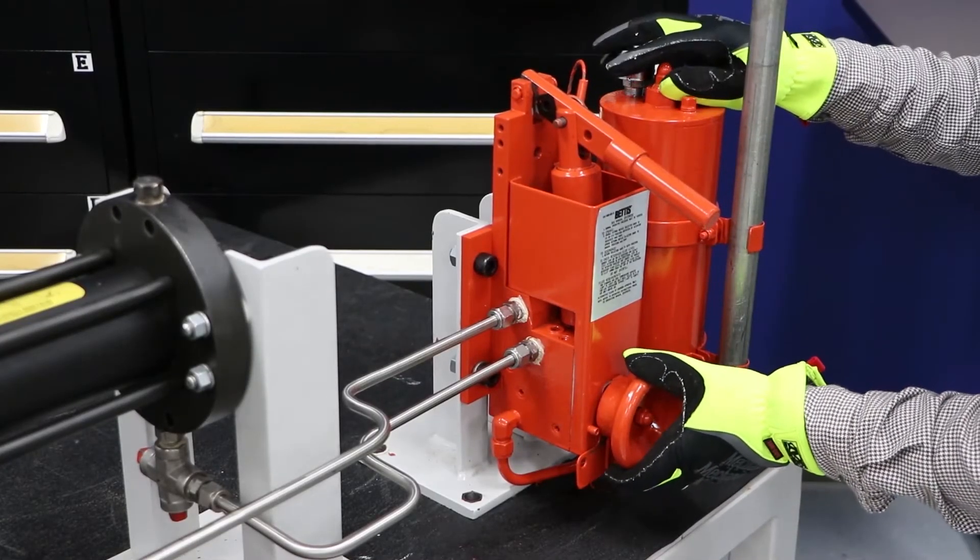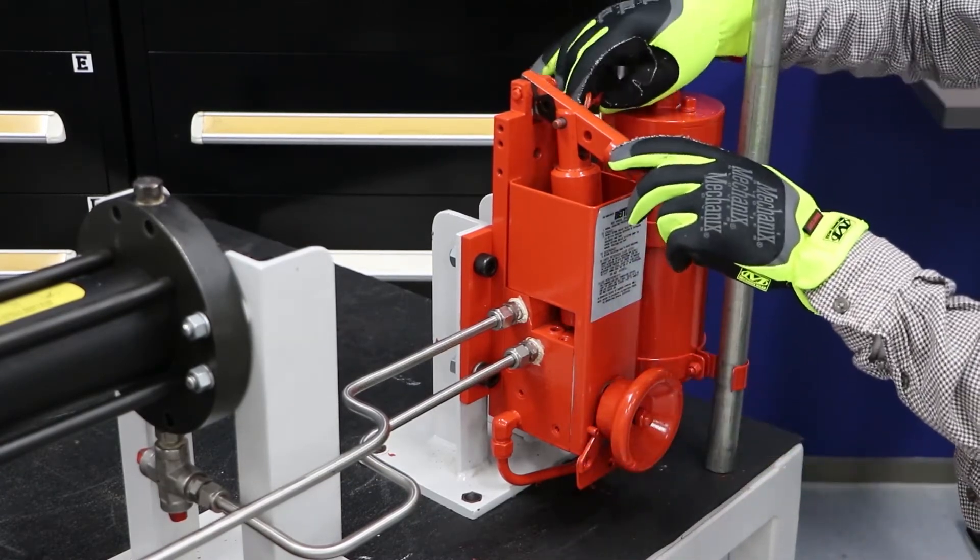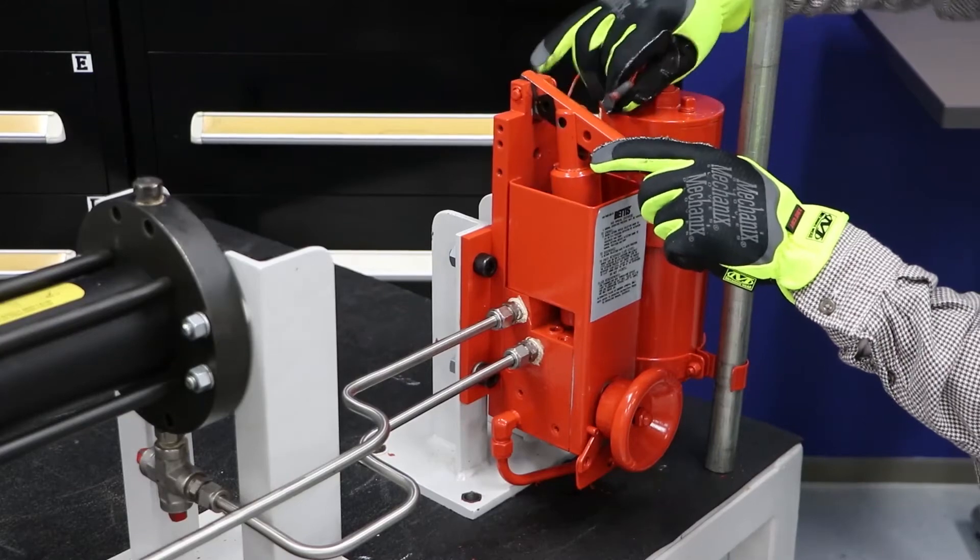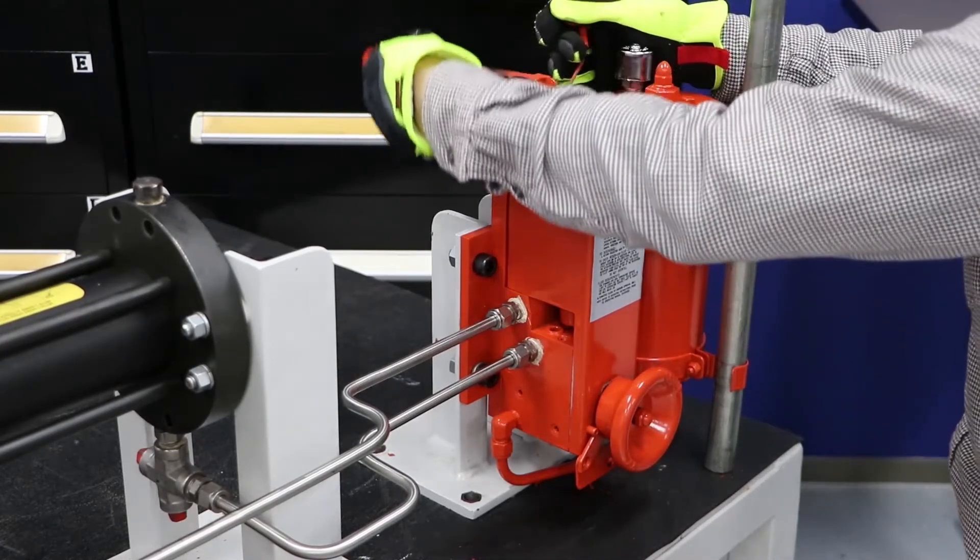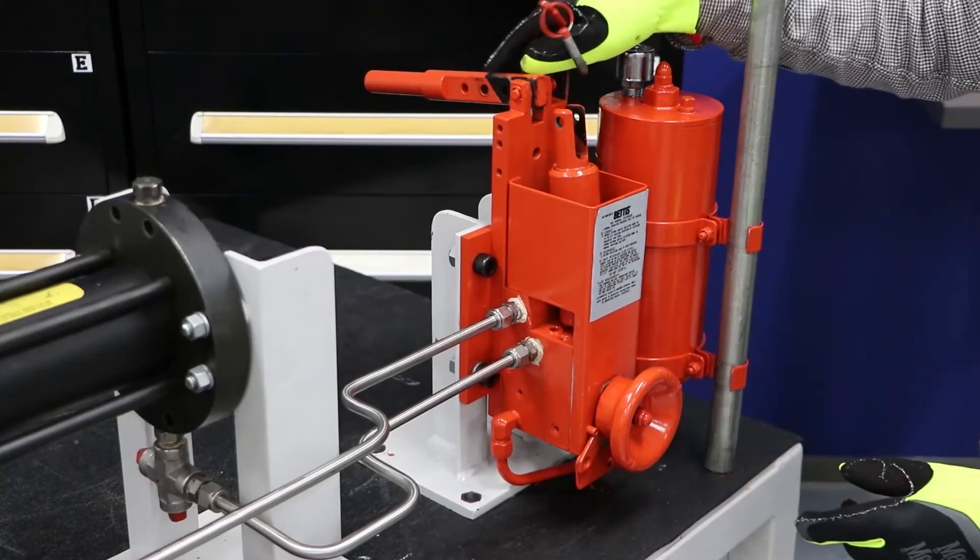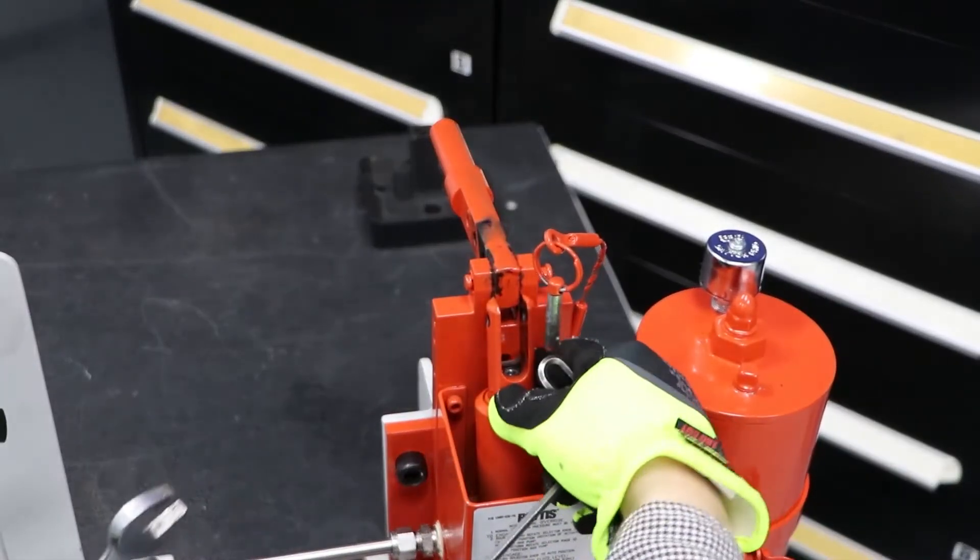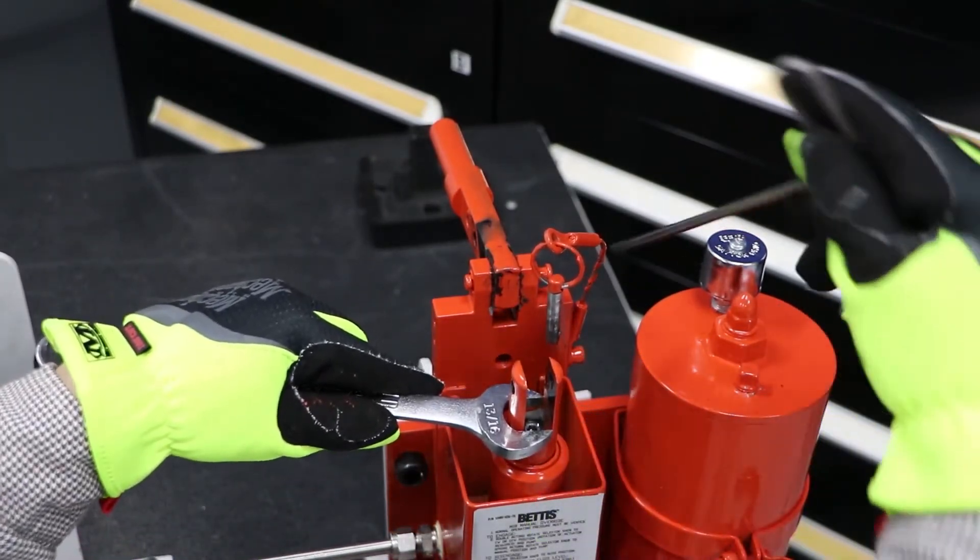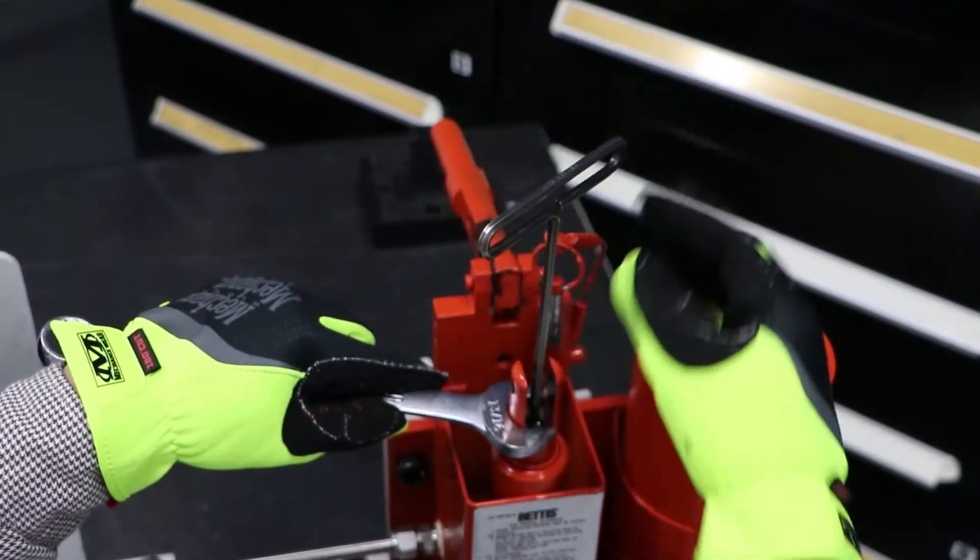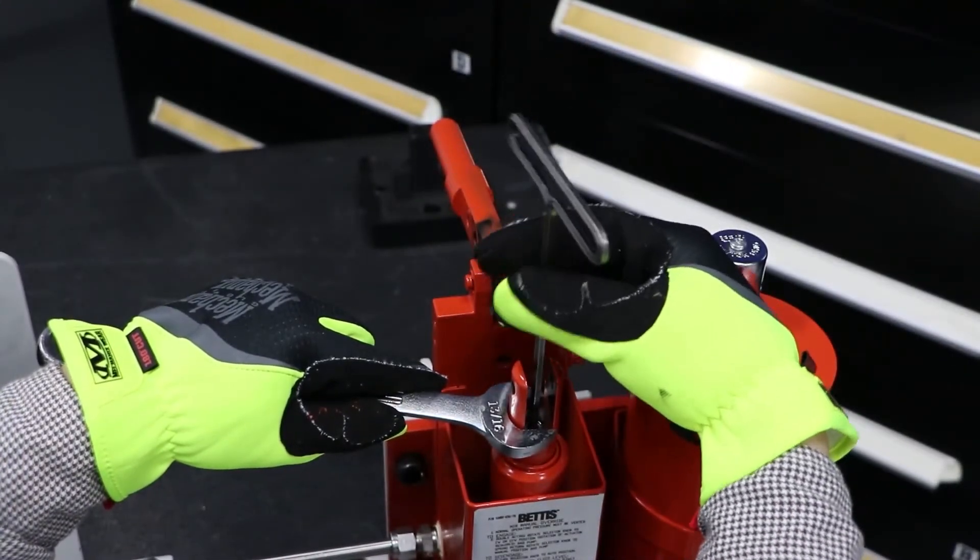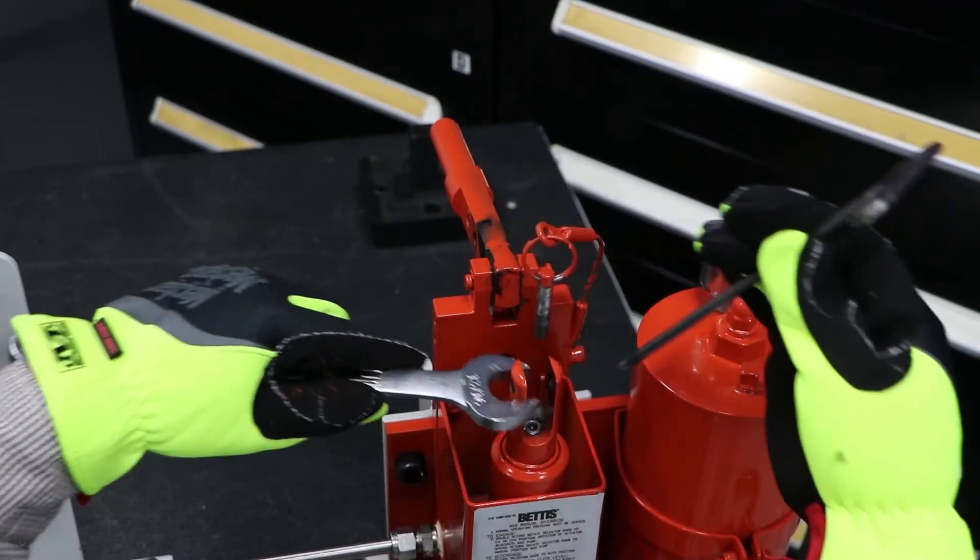First, make sure the control knob is in the manual position. Pull the quick release pin connected to the cable assembly. Rotate the pump handle lever 180 degrees to get it out of the way. Use a 13/16 wrench to keep the pump rod from rotating while you use a 3/16 Allen key to loosen the 1/8 pipe plug.